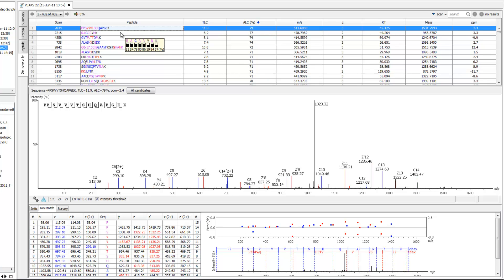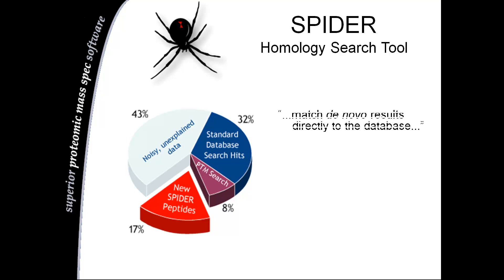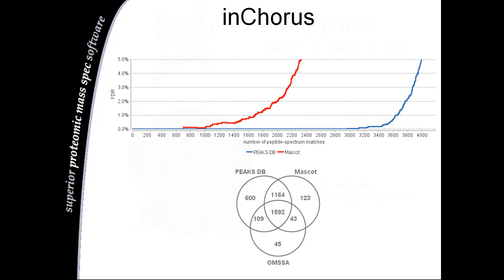As mentioned before, PEAKS is an integrated proteomics toolset. In addition to the renowned de novo sequencing algorithm and the newly improved PEAKSDB, PEAKS also consists of SPDR, a homology search tool that is designed to match your de novo results directly to the database.